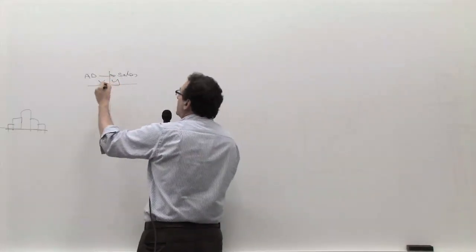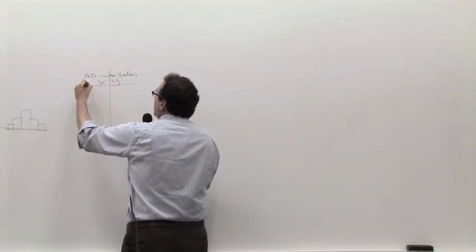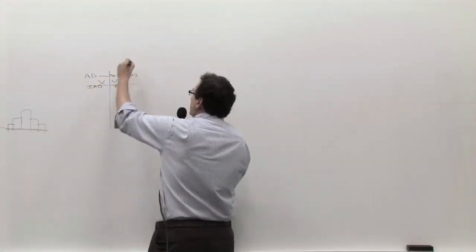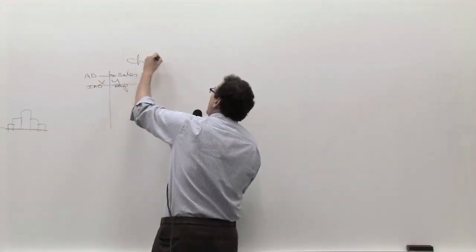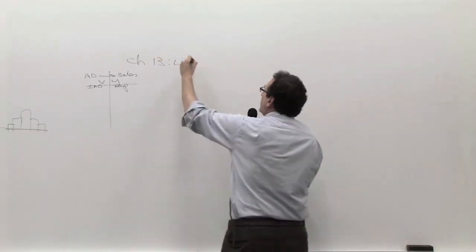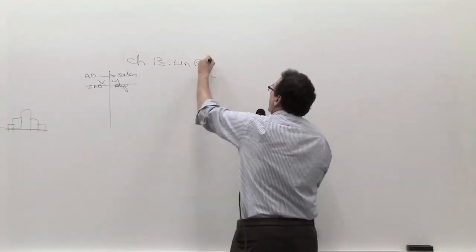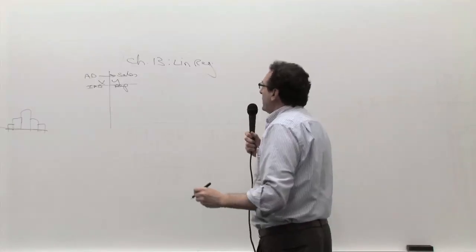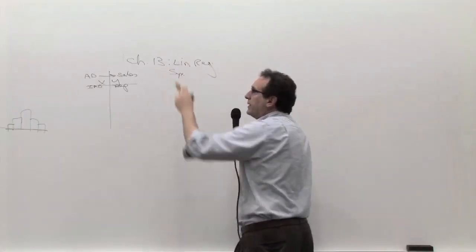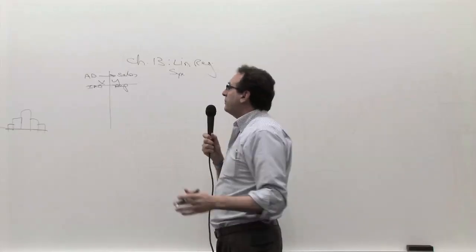Example is advertising and sales. This is the X called the independent variable. This is called the dependent variable. By the way, this is chapter 13 linear regression. This is for the purpose of the video. Today we're going to be doing the SYX. We'll get into that in a few minutes.